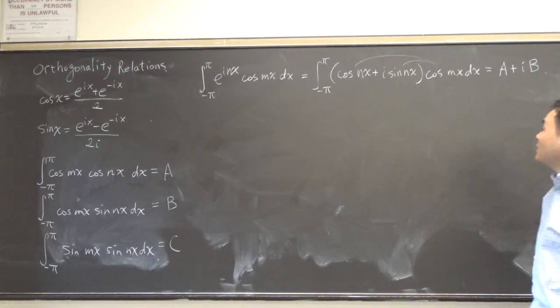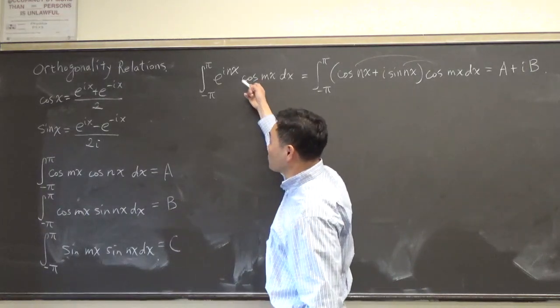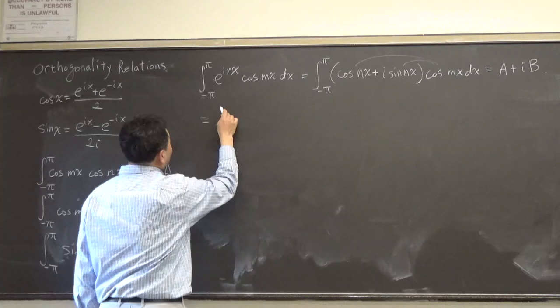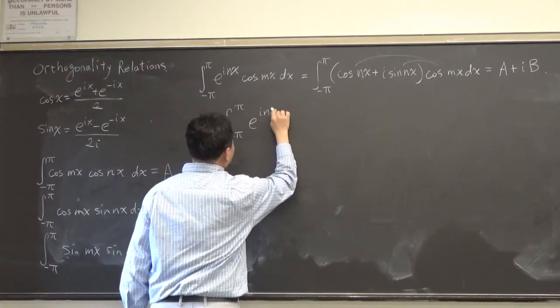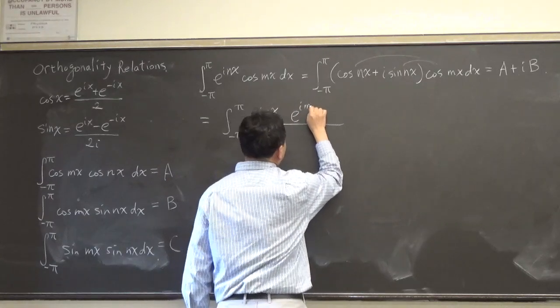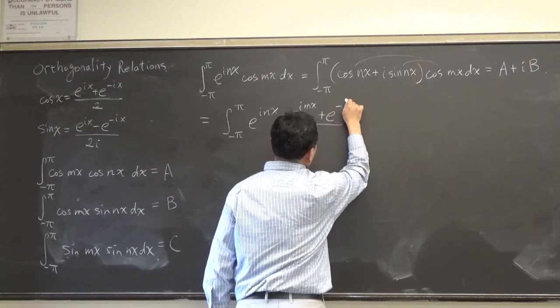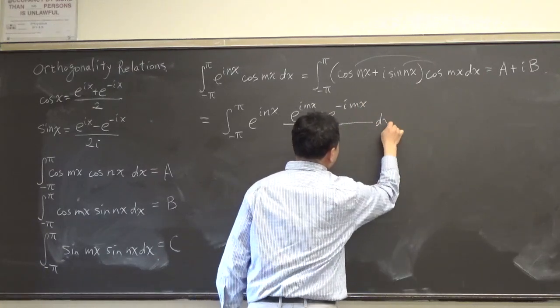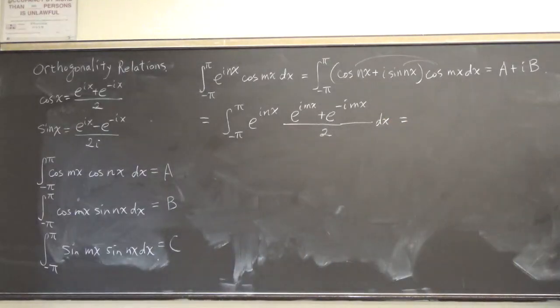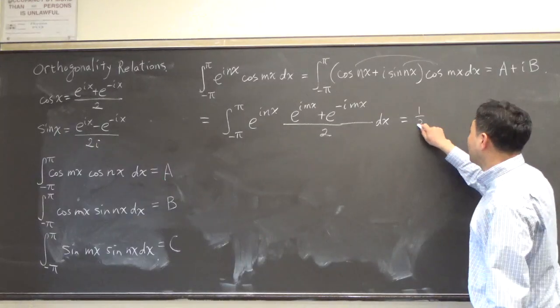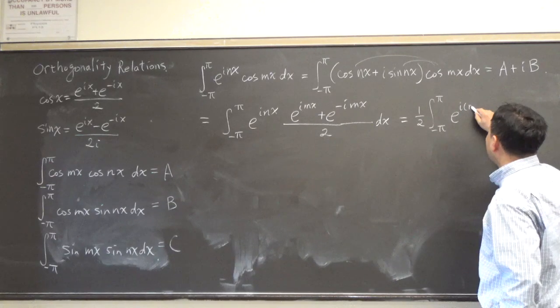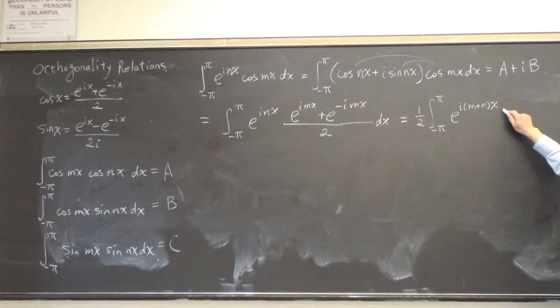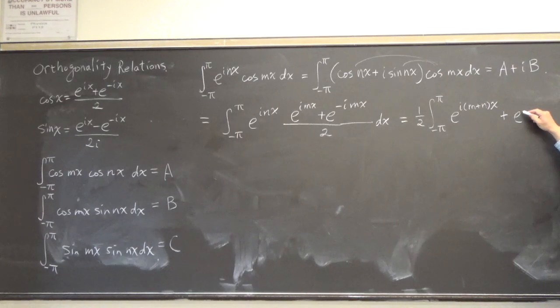We don't want to write it like this. We actually want to replace the cosine mx using that. So let's see what happens. So this integral will be negative pi to pi e^(inx) times (e^(imx) + e^(-imx))/2 dx. So that's the i times nx. You can factor the one half outside. And we see that there are two integrals here. There's the e^(i(n+m)x) plus e^(i(n-m)x) dx.